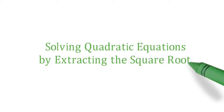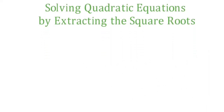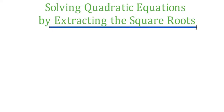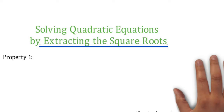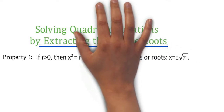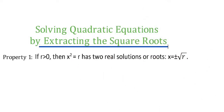In solving quadratic equations by extracting the square roots, we have three properties, starting with property number one. If r is greater than zero, then x squared is equal to r has two real solutions or roots. That is, x is equal to positive or negative square root of r.